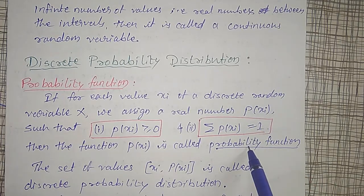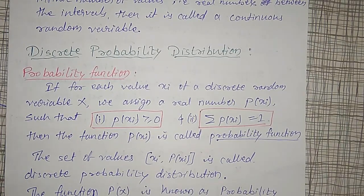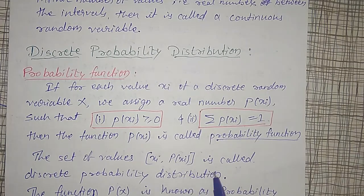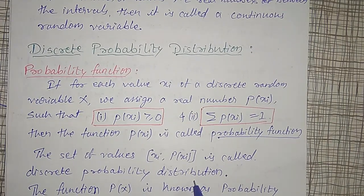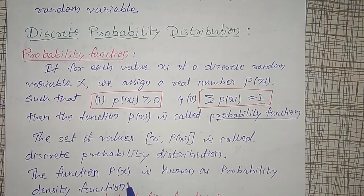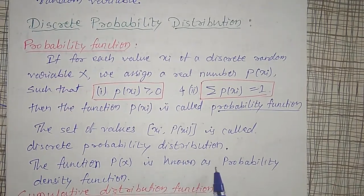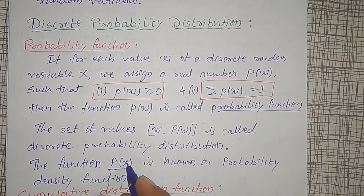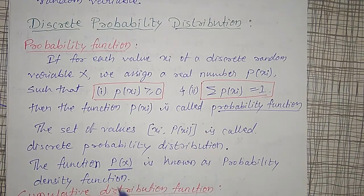The set of all values x_i — for example 0, 1, 2, 3 — and their corresponding P(x_i) values together is known as a probability distribution. The function P(x) is known as a probability density function. If X is a discrete random variable, such functions are known as a probability density function.